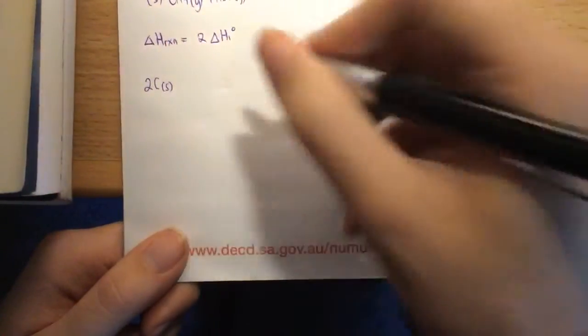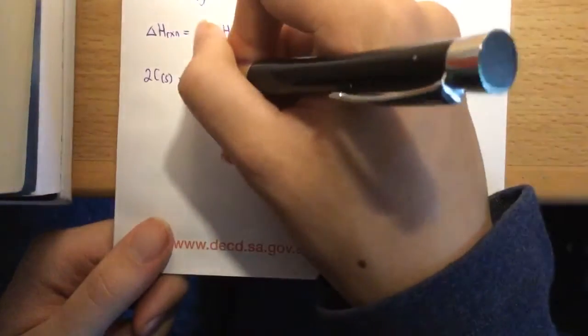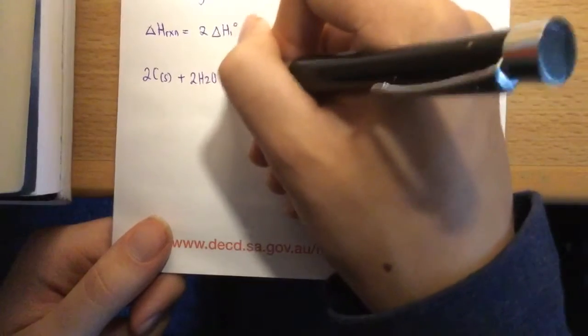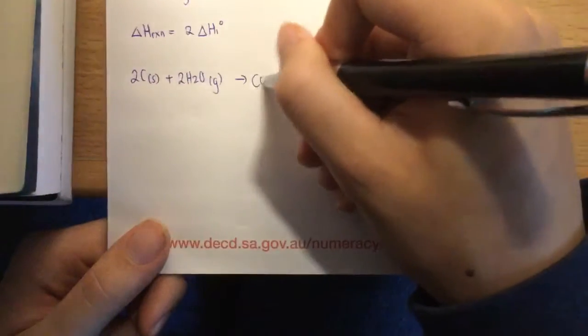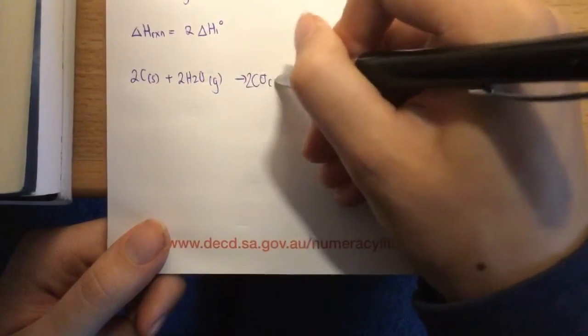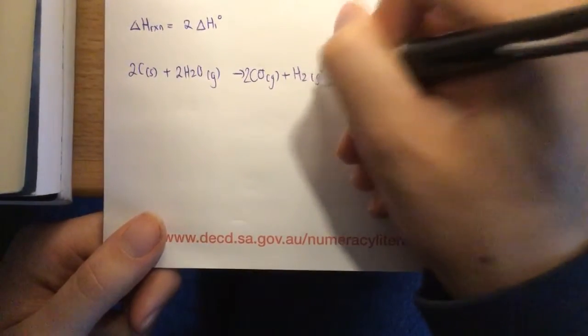So we've got two Cs, and then we've got plus, it was just H2O here, so we've got two H2O, and it's in gaseous form. And then if we look back at the equation, we're obviously going to double that as well. In fact everything in this first equation is going to be doubled, which is nice and easy to do.